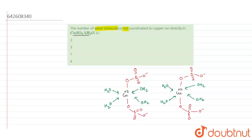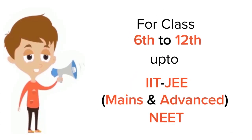Now let us see where the fifth water molecule comes in. The fifth water molecule is bonded here to one oxygen of a sulfate and to another oxygen of an adjacent sulfate — it bridges between them. So the number of water molecules not coordinated directly to the copper ion is only one. The answer is option C: one.